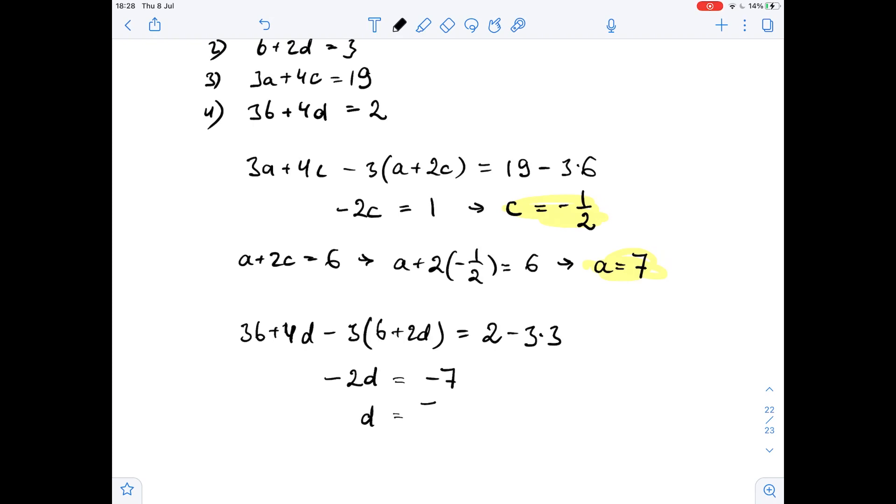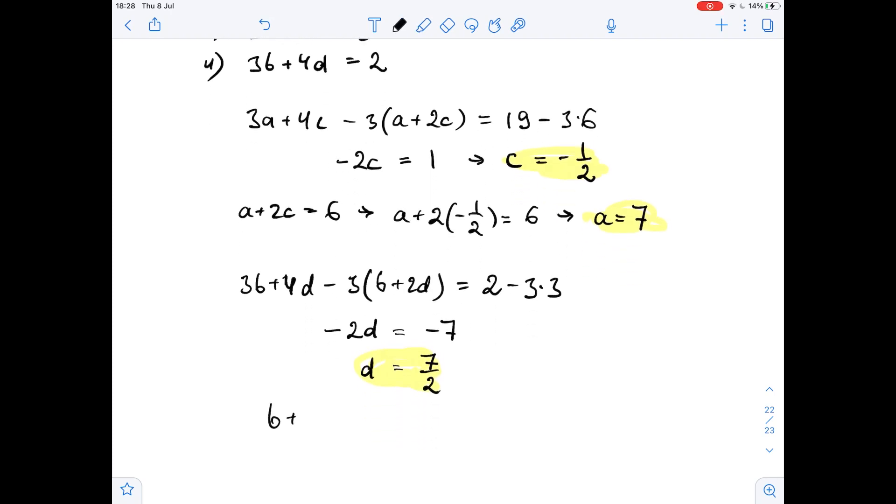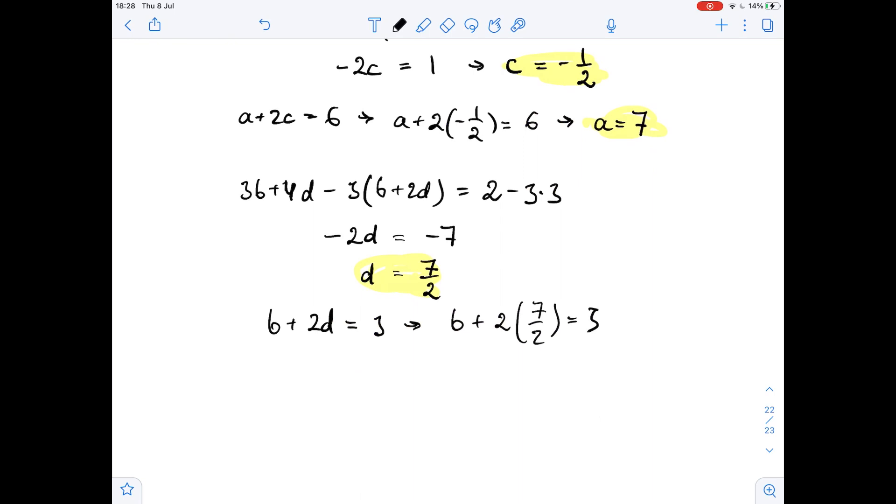Then d equals 7 over 2. And now we substitute 7 over 2 for d in our second equation, so b plus 2d equals 3, then b plus 2 times 7 over 2 equals 3, then b plus 7 equals 3, so b equals negative 4. So we have found all variables: a equals 7, b equals negative 4, c equals negative 1 over 2, and d equals 7 over 2.